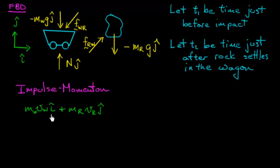In writing this impulse momentum principle, we start with momentum of the system. We have mass of the wagon times velocity of the wagon, MWVW in the i hat direction. Then we have mass of the rock times velocity of the rock, VR in the minus j hat direction. There's my initial momentum.